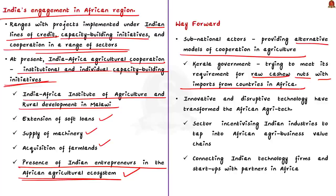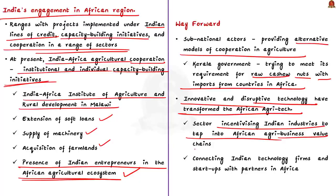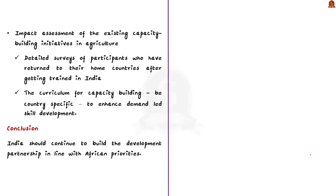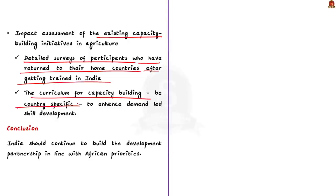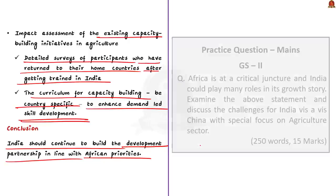Secondly, innovative and disruptive technology has transformed the African agricultural technology sector, as the startup ecosystem in the continent registered a growth of 110% between 2016 and 2018. Hence, incentivising Indian industries to tap into African agribusiness value chains and connecting Indian technology firms and startups with partners in Africa can be a good solution. Thirdly, an impact assessment of existing capacity building initiatives in agriculture needs to be conducted, including surveys of participants who returned after training in India. The curriculum for capacity building should be country-specific and demand-led. Finally, the article concludes that India should continue to build the development partnership in line with African priorities.